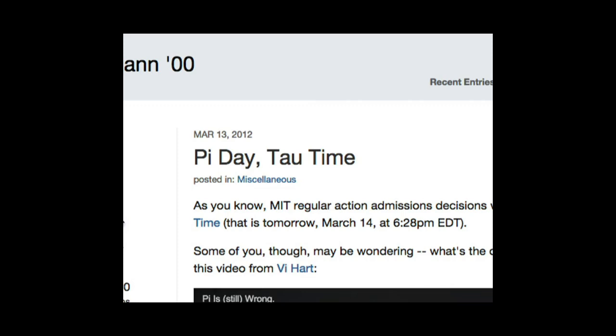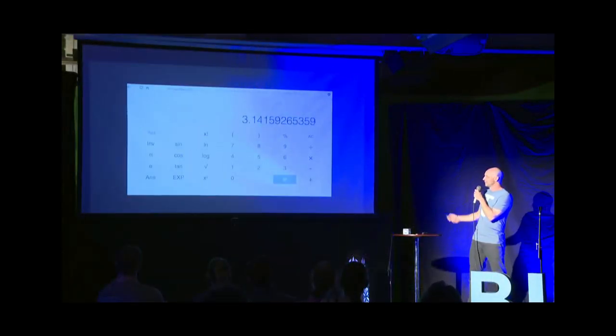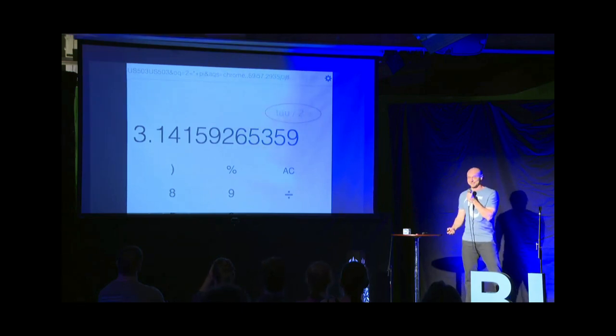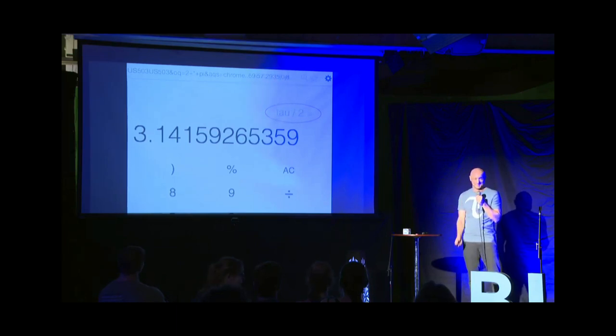If you type a mathematical expression into Google, it will drop the result into a calculator and evaluate it. And if you evaluate tau over 2, it comes in as 3.14159. In fact, lots of computer programming languages have added tau. It's supported at the Khan Academy, lots of other places.